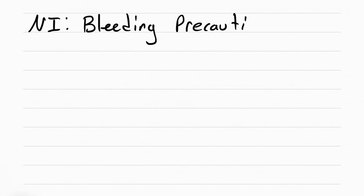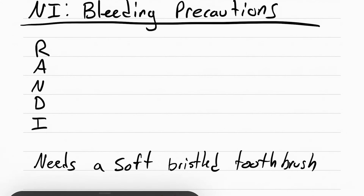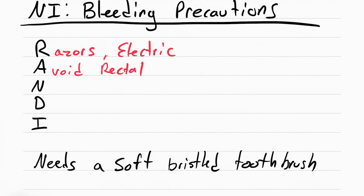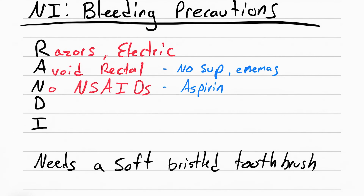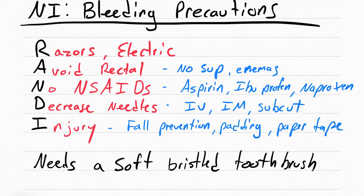Nursing interventions while patients are on anticoagulants include bleeding precautions. The mnemonic to remember is RANDY. Razors have to be electric. Avoid rectal — no suppositories or enemas because they can bleed easily. No NSAIDs like aspirin, ibuprofen, or naproxen because these also cause bleeding. Decrease needles — reduce IVs, IM, or subcutaneous injections. Protect the patient from injury — prevent falls, pad sharp corners, use paper tape. And Randy needs a soft bristled toothbrush to prevent the gums from bleeding.